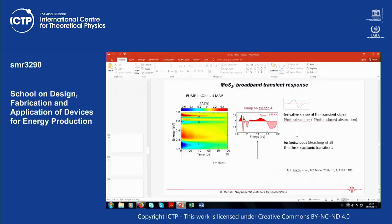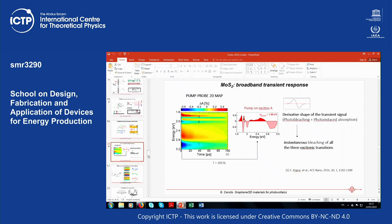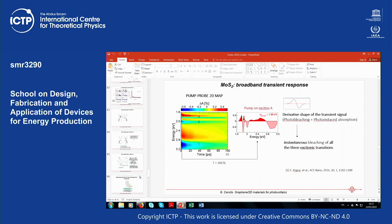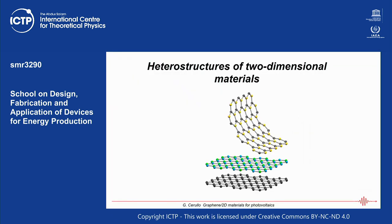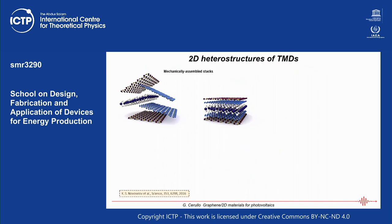Now I want to show you heterostructures of 2D materials. Having established that you can make graphene and these two-dimensional semiconductors, you can add another degree of freedom by stacking these materials on top of each other — mechanically assembling, for example, one layer of graphene, one layer of a transition metal dichalcogenide, and another layer of graphene. The layers are held together by the same van der Waals interactions that hold them together in the layered material, so you preserve essentially the individual layer character.